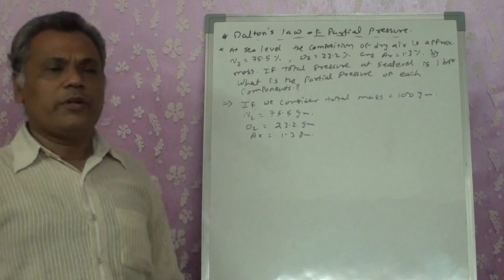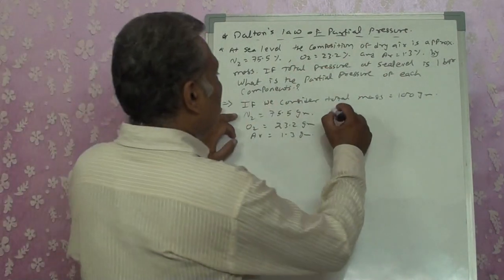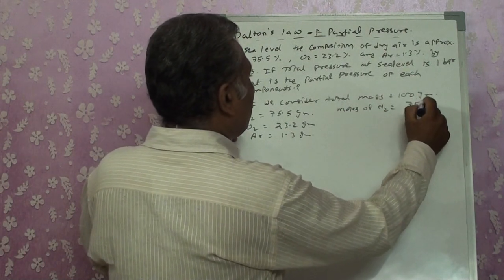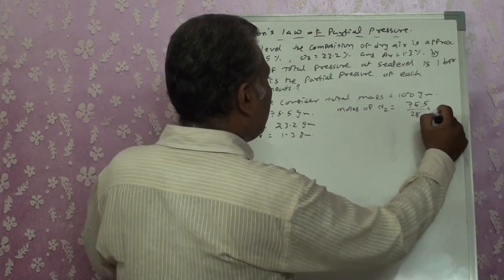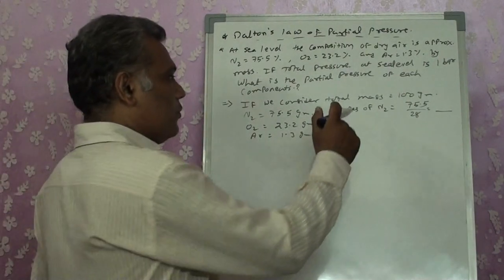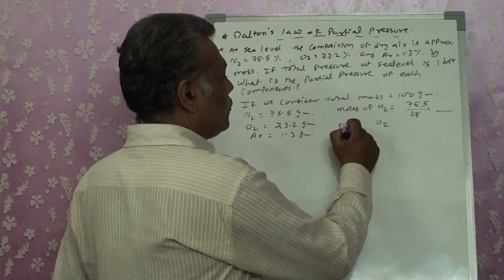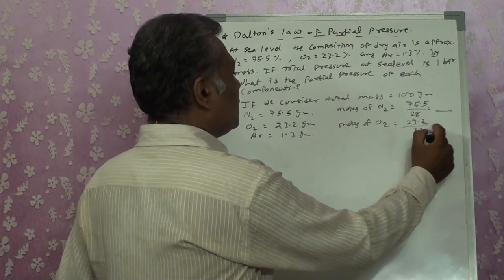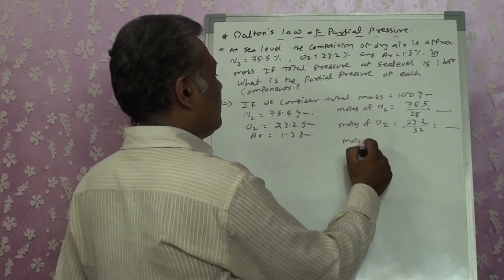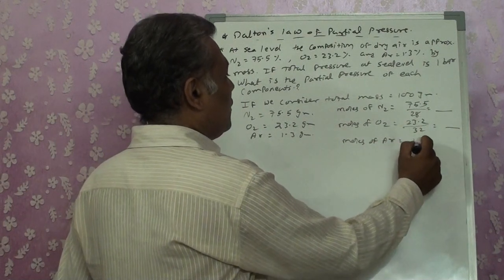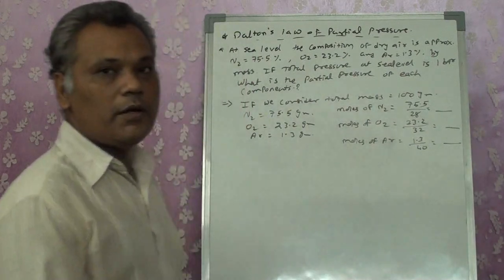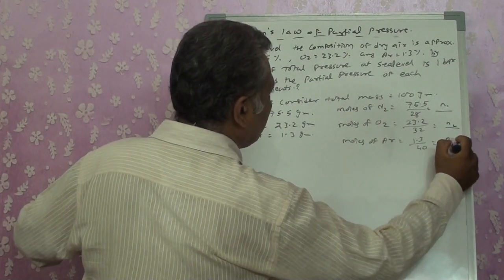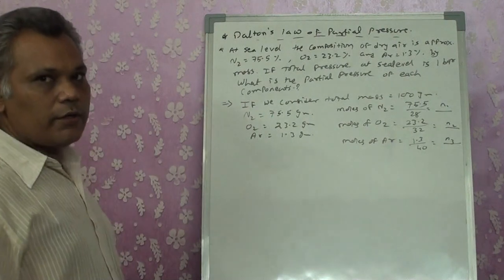From the masses, we calculate moles: moles of N2 = 75.5/28 (call it N1), moles of O2 = 23.2/32 (call it N2), moles of Ar = 1.3/40 (call it N3). You can calculate these values using a calculator. Now we have the number of moles of each component.